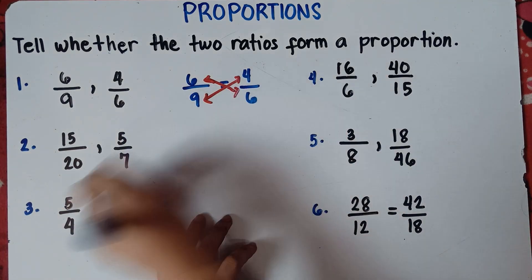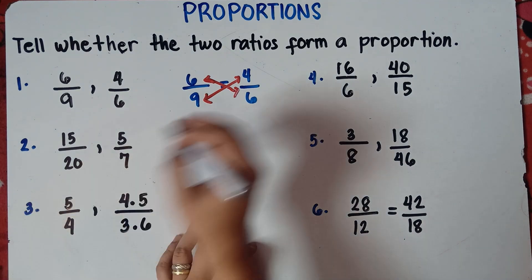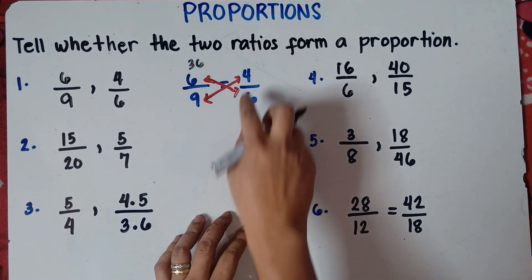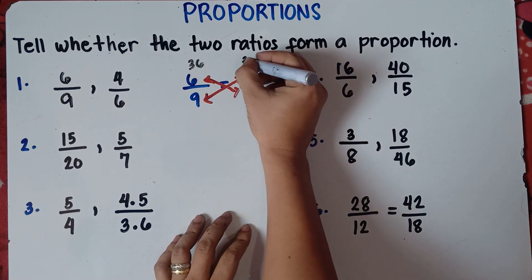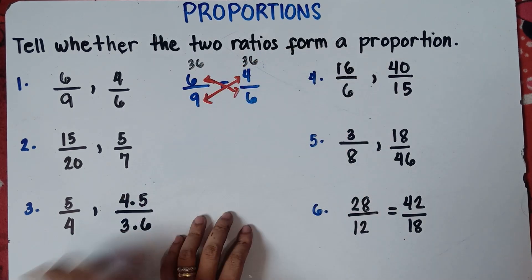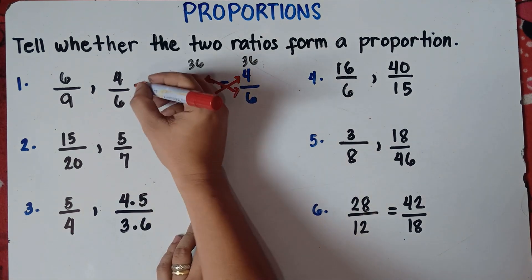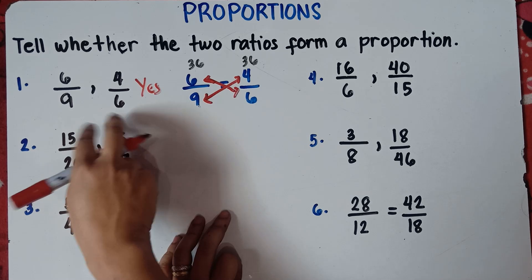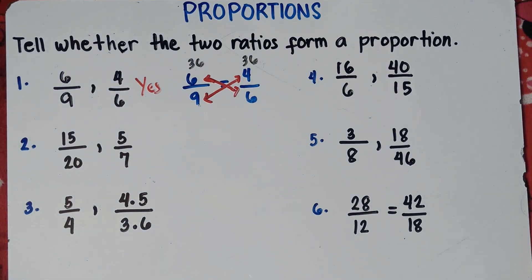So 6 times 6 — that is 36. And 4 times 9 — that is also 36. Therefore, for number one, our answer is yes. These two ratios will form a proportion. Easy, right?